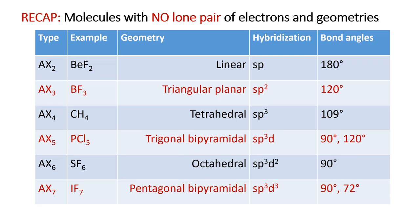To recap: if the central atom is surrounded by two groups, as in beryllium difluoride, the molecule occupies a linear geometry because this is the maximum distance they want to maintain due to repulsion. AX3 is trigonal planar, AX4 is tetrahedral, AX5 is trigonal bipyramidal, AX6 is octahedral, and AX7 is pentagonal bipyramidal. All of these geometries and their associated bond angles must be remembered to solve problems correctly.